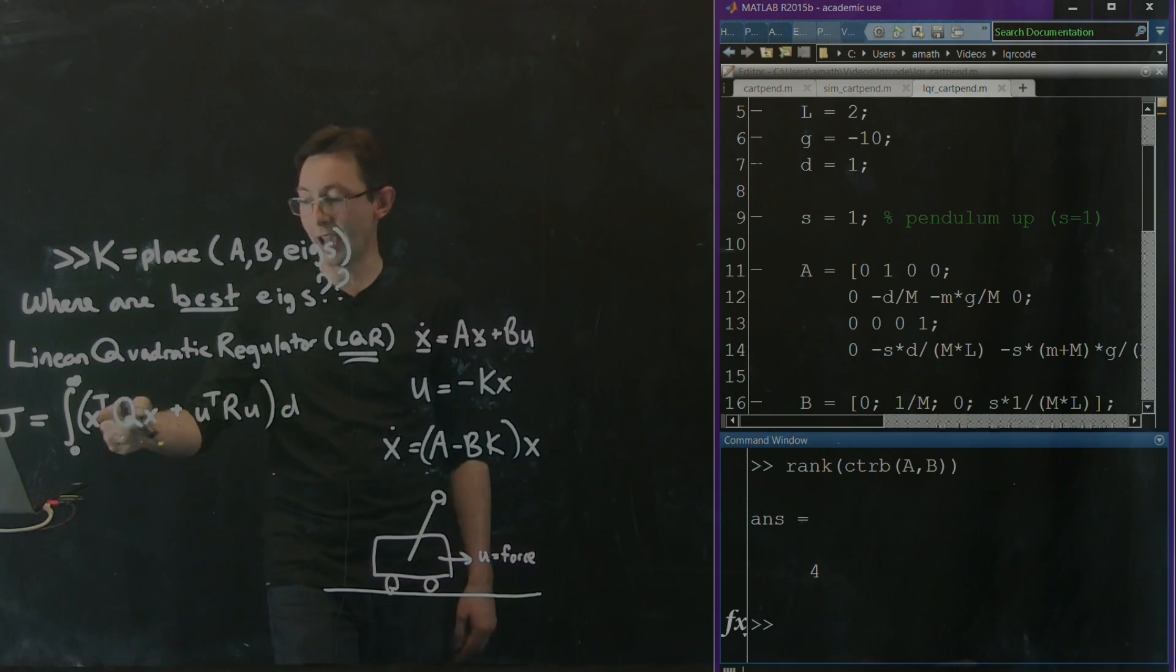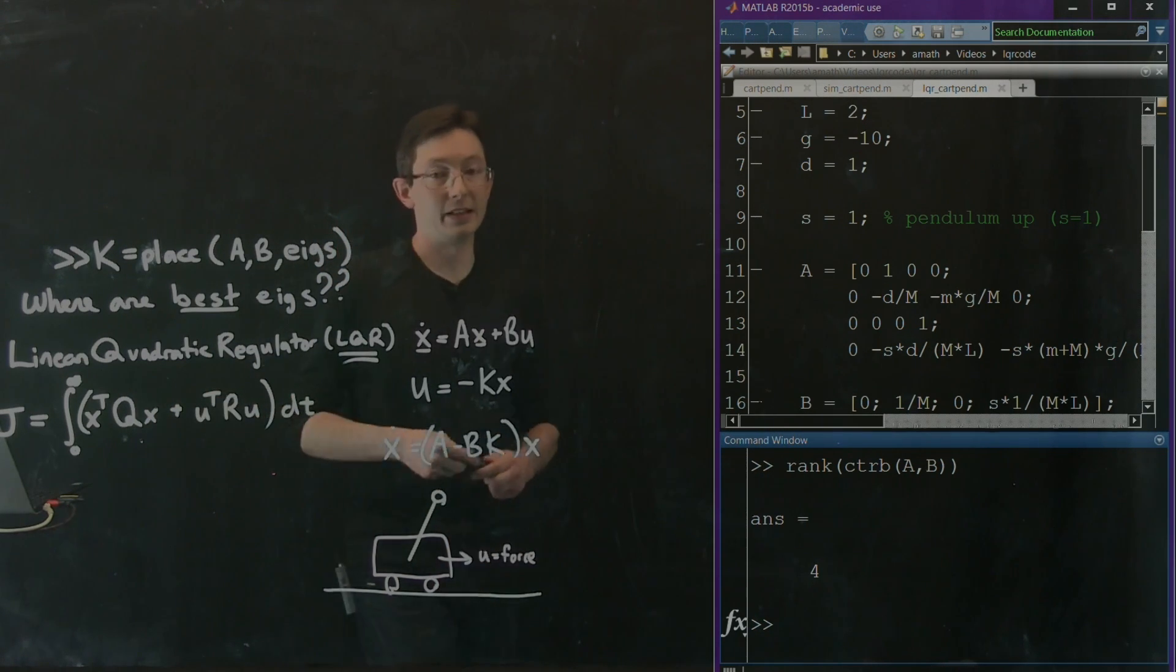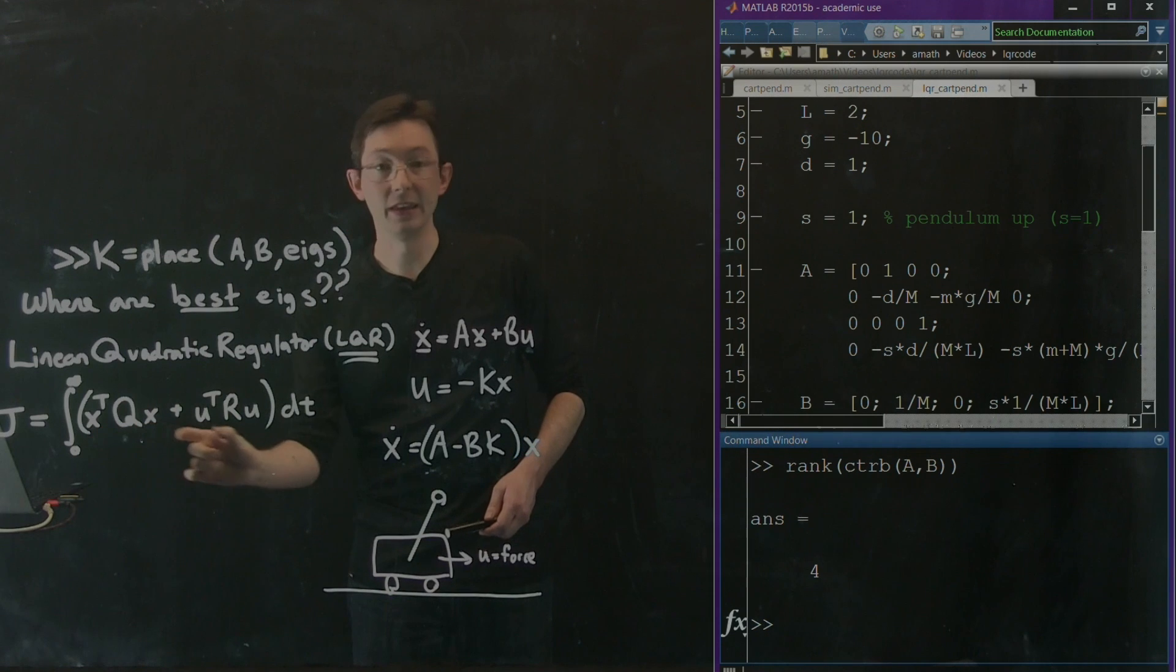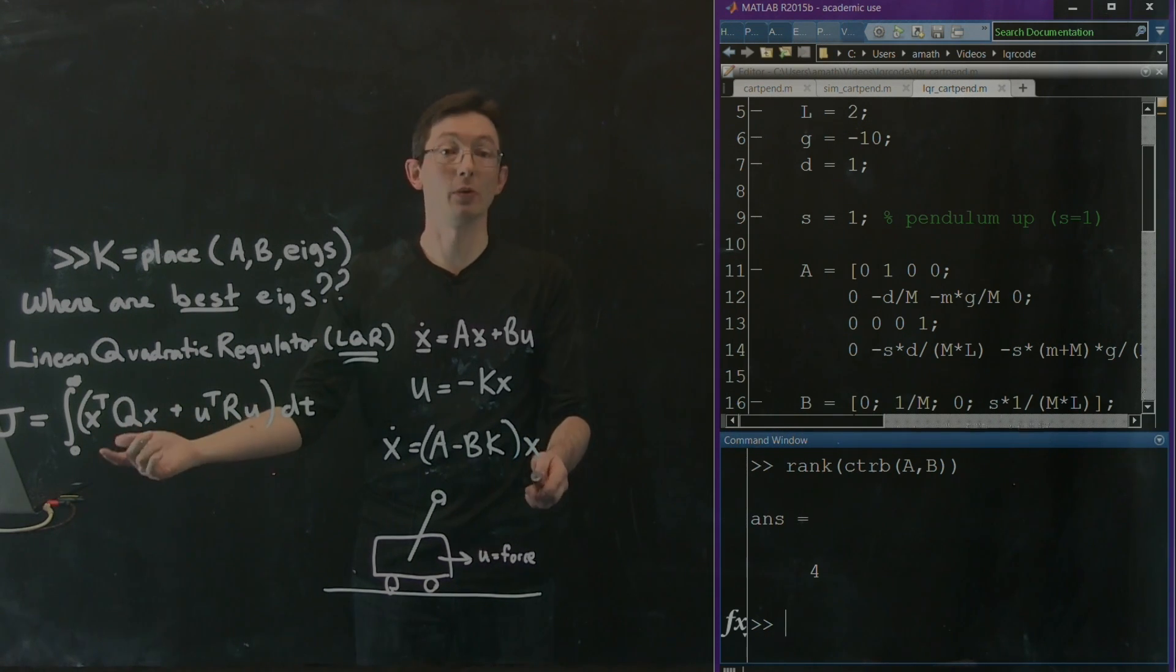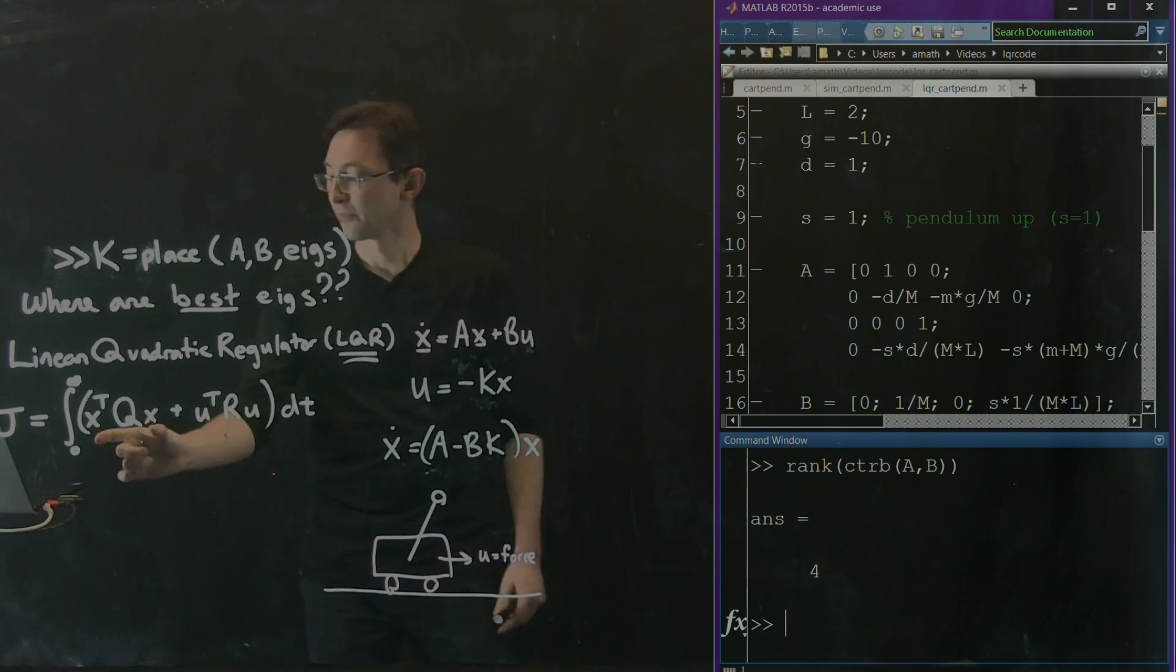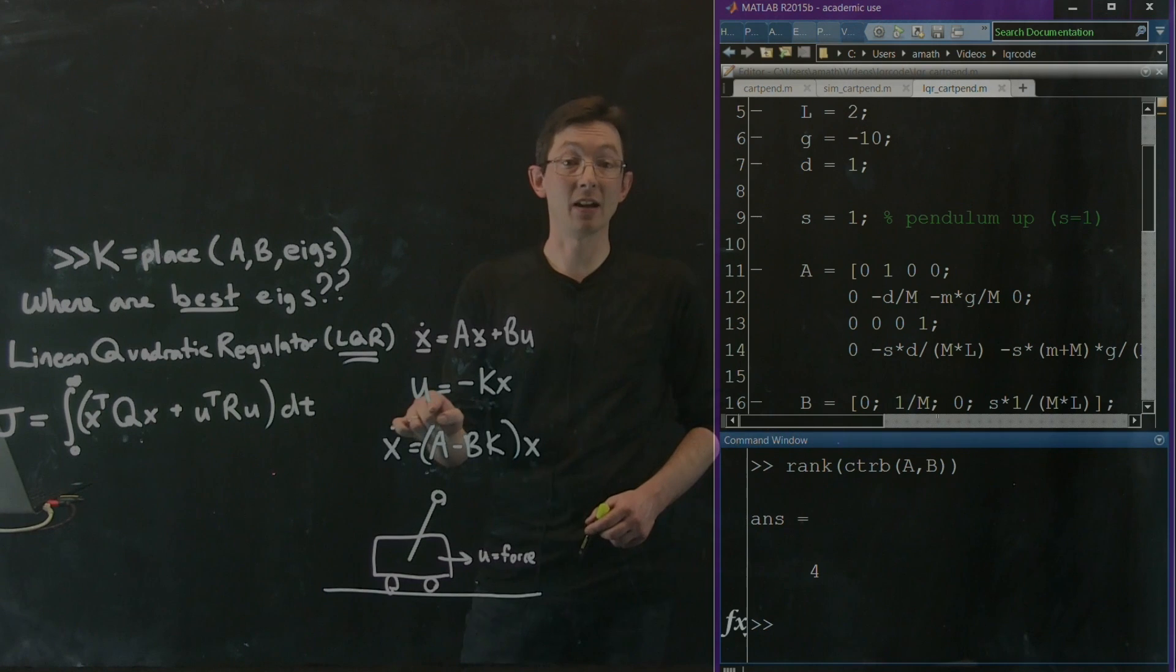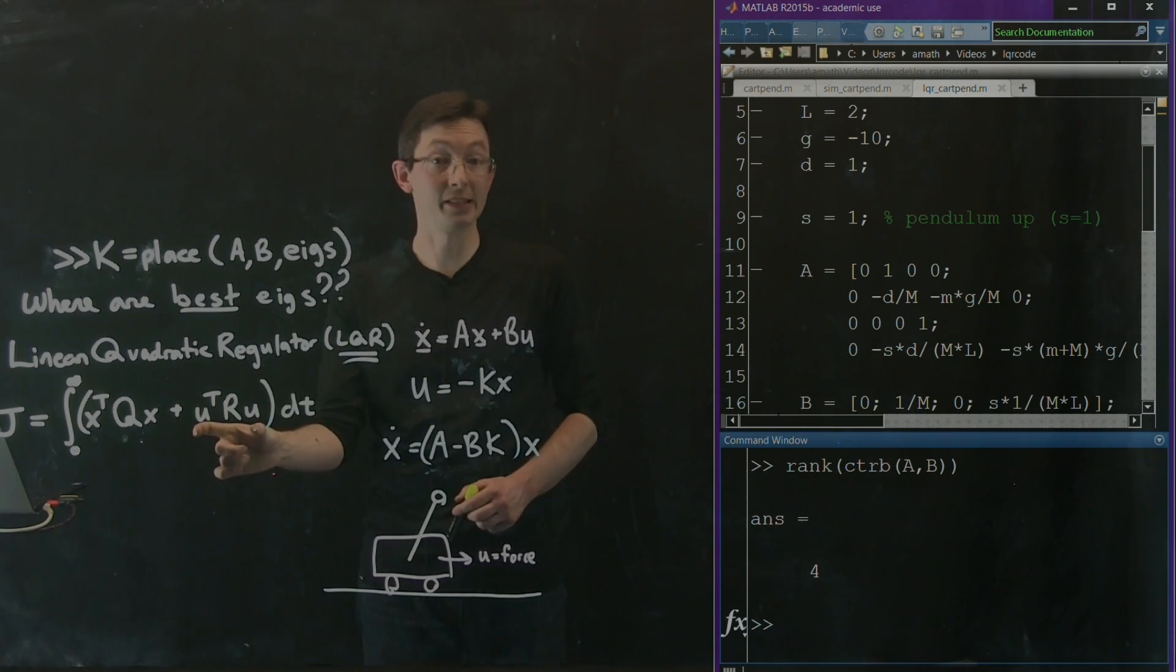And X and U are both functions of T. So I'm going to integrate with respect to T. I'm going to add up these penalties. If my state is not where I tell it to be, this thing's trying to stabilize to 0, for example, then this is going to be big. So I need this thing to stabilize to where I tell it to quickly for this to be small. And I want to not spend a lot of energy doing so, or else this is going to be big.